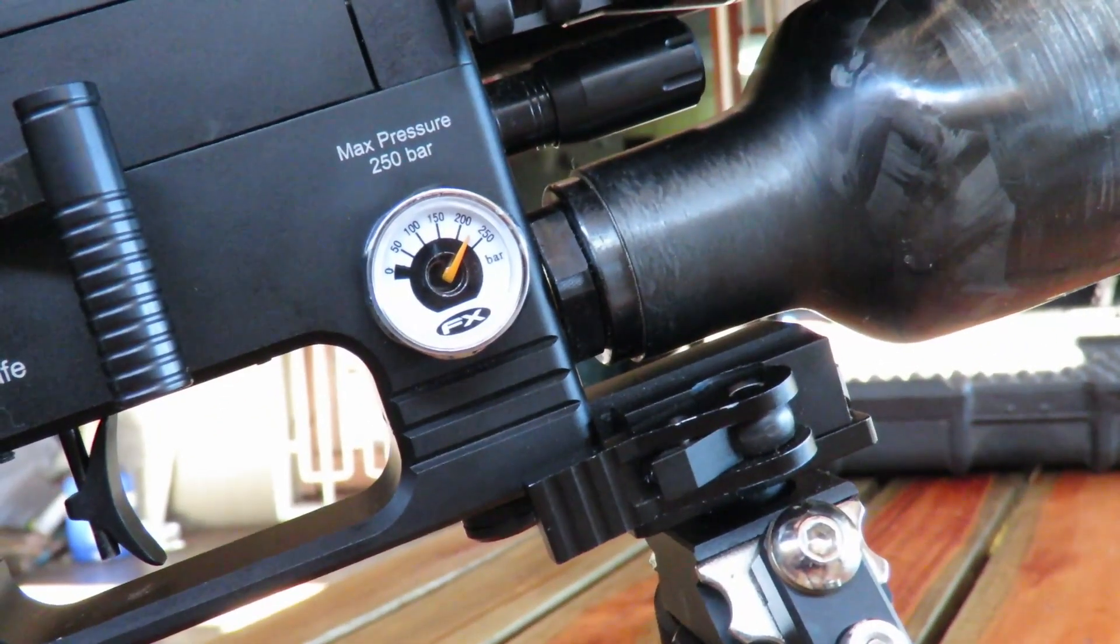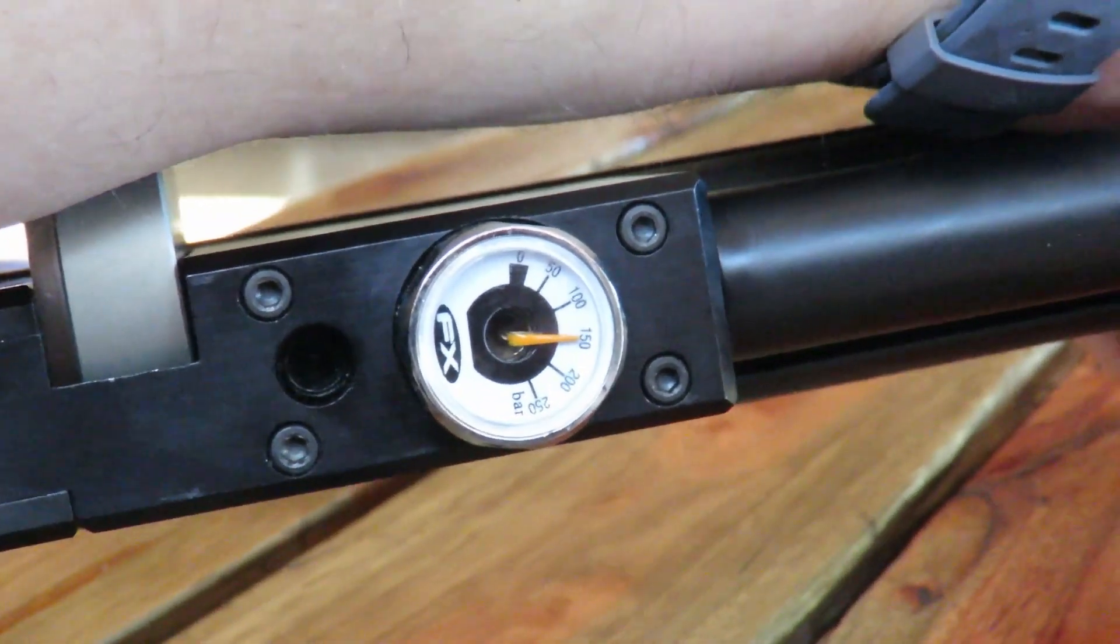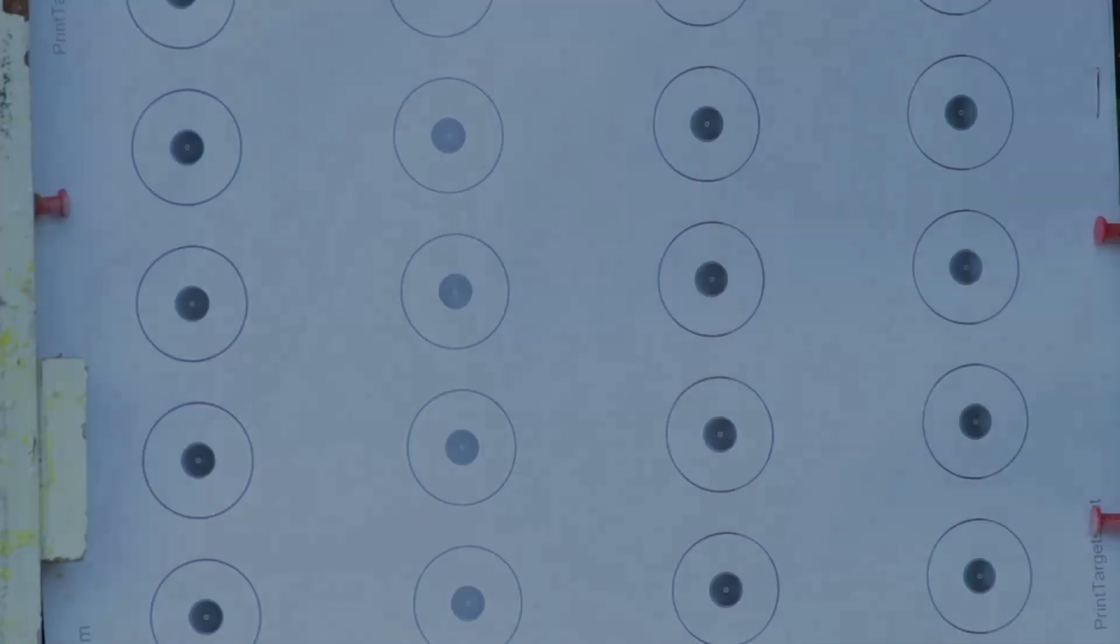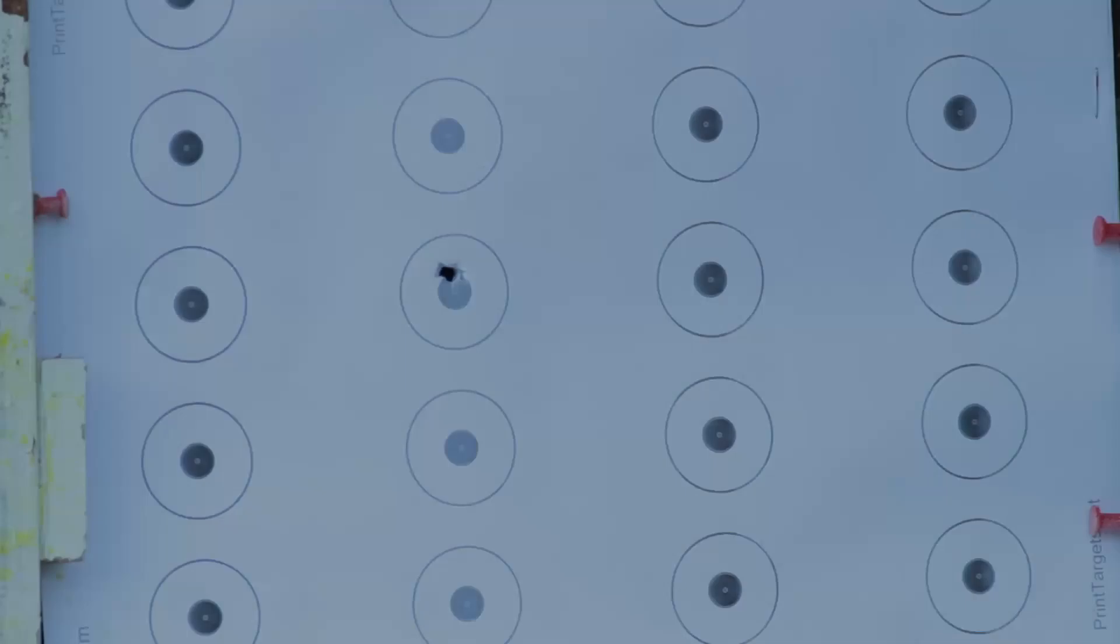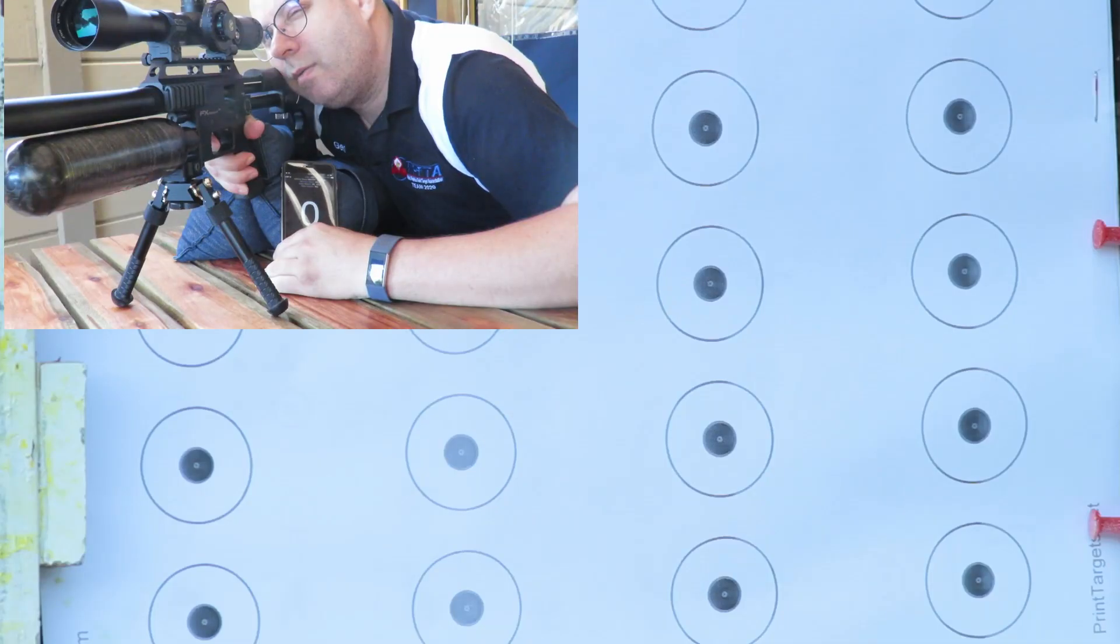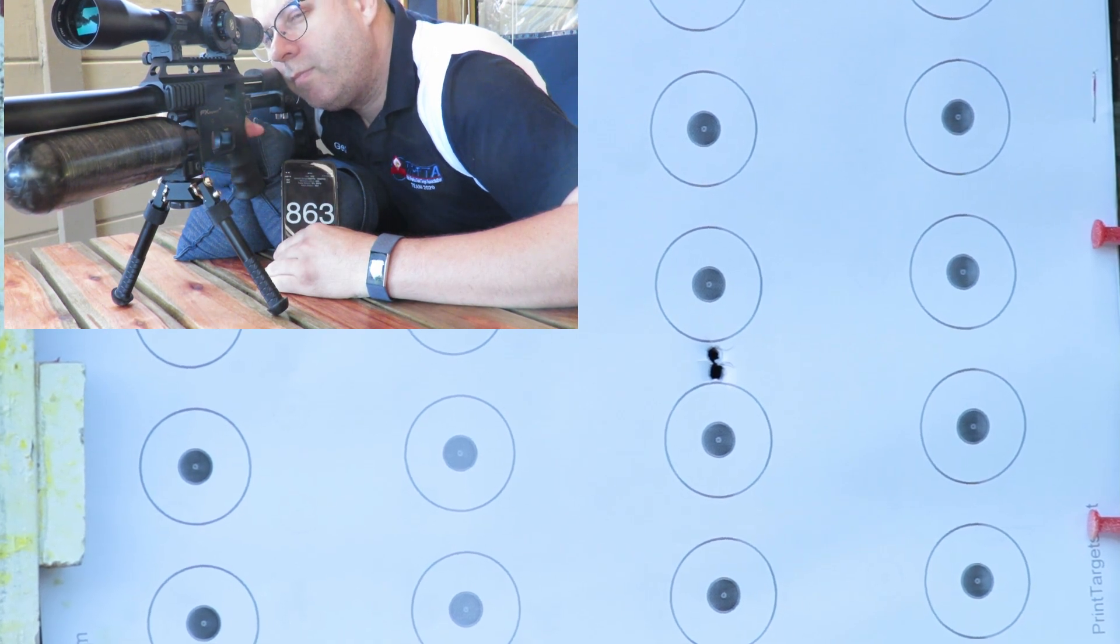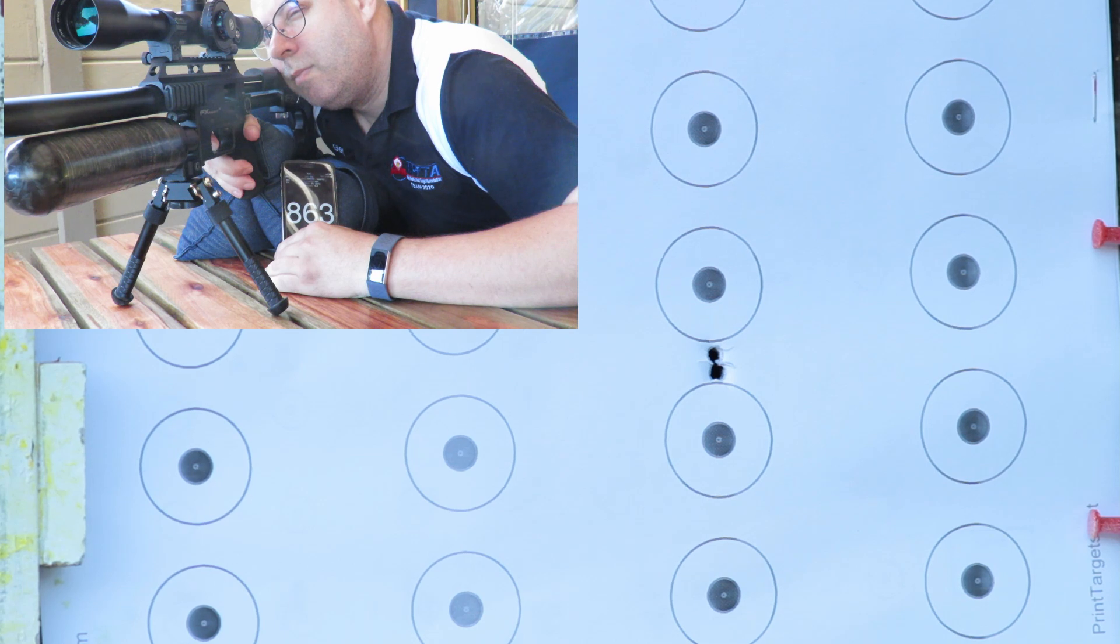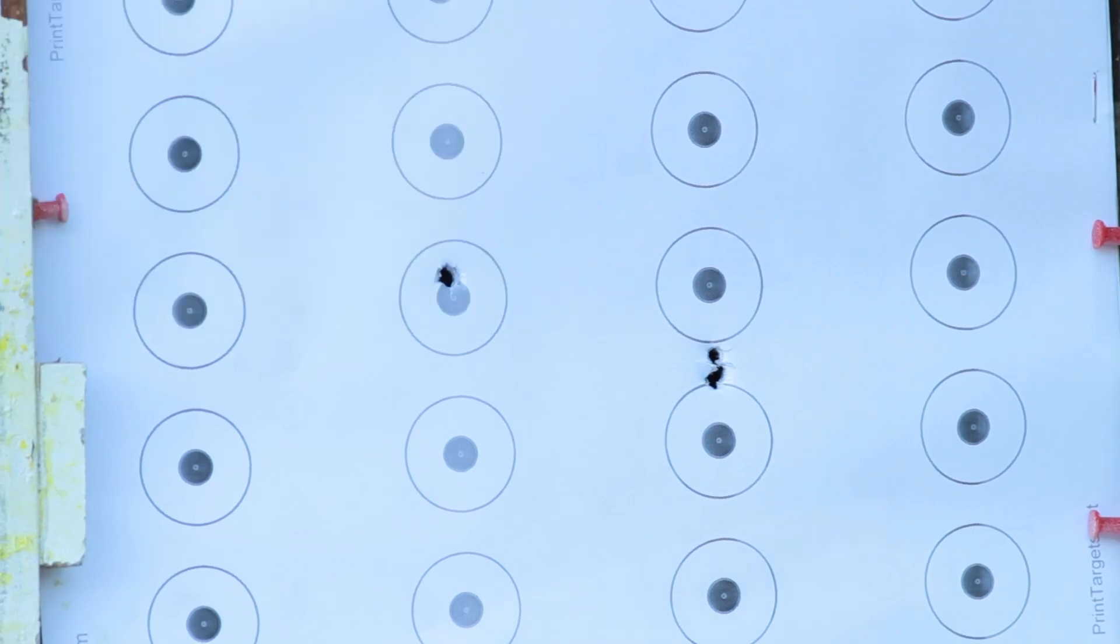Just gonna do some sighting and then repeat the exercise with the FX radar on. The FX radar mounted to the front of the barrel does have a point of impact shift that you need to allow for.